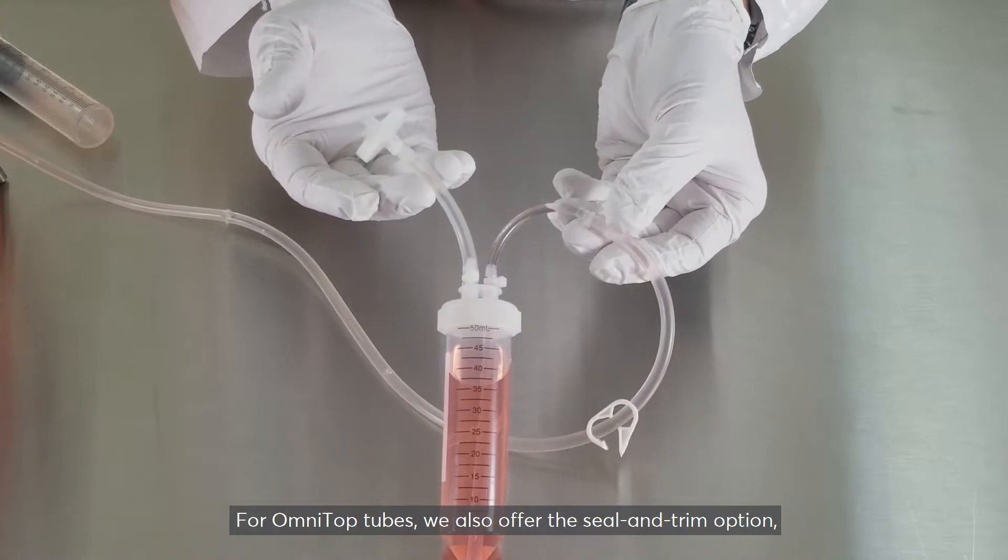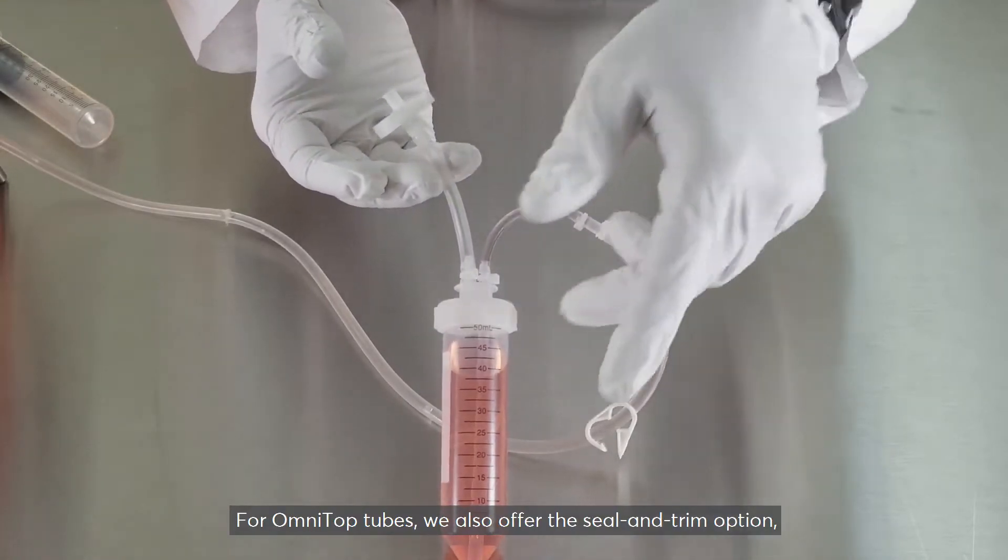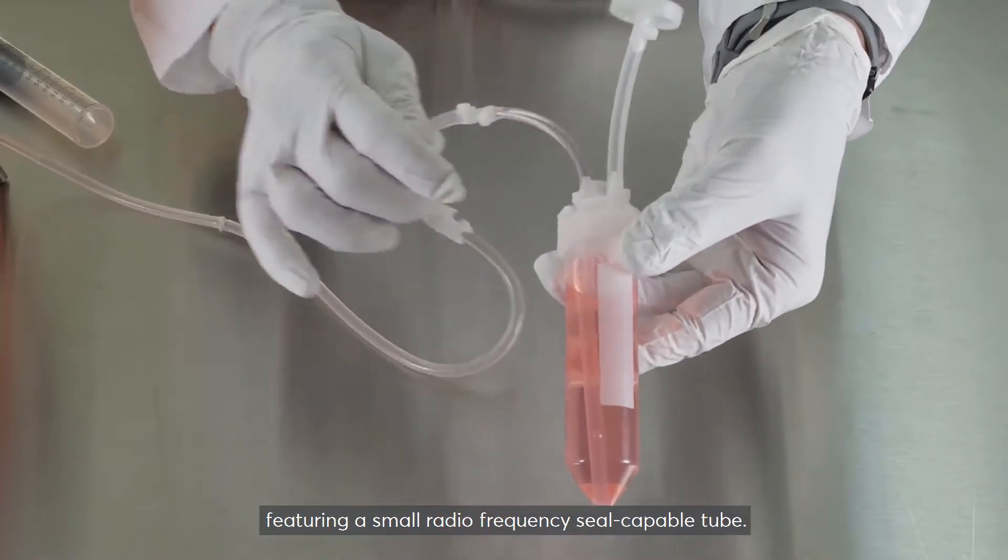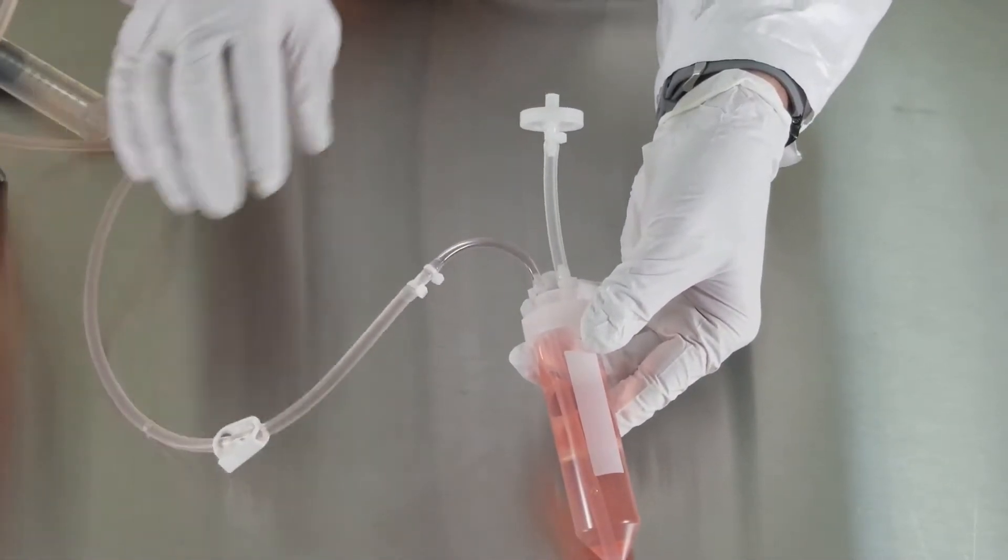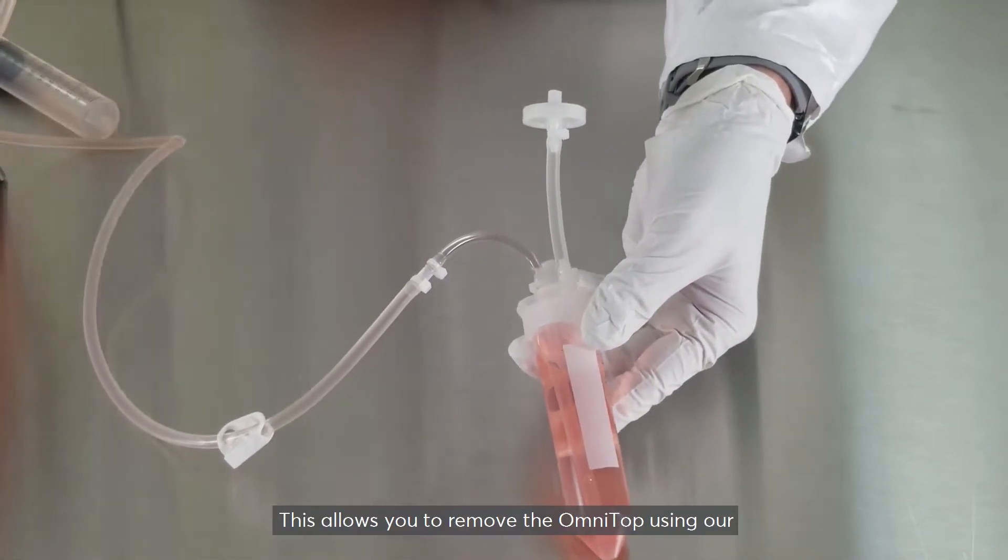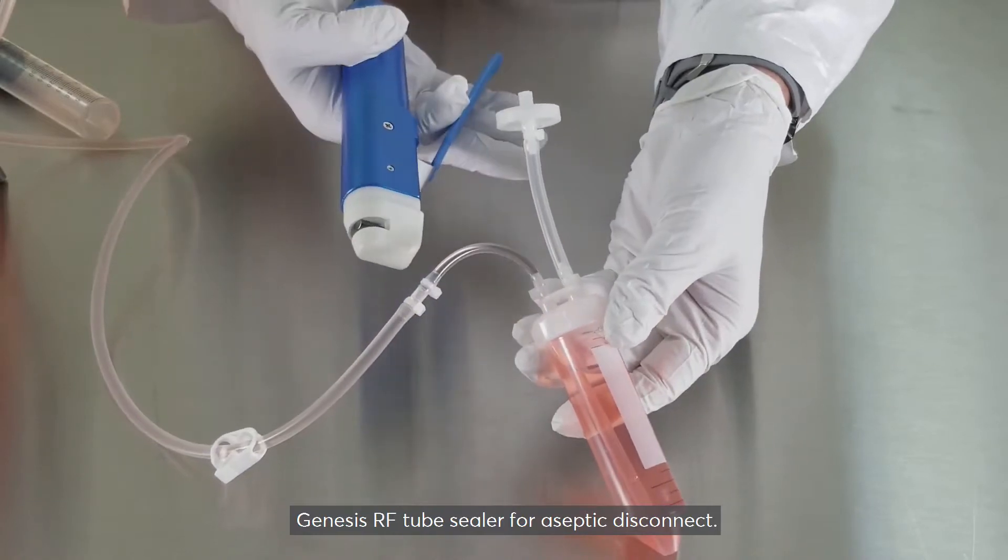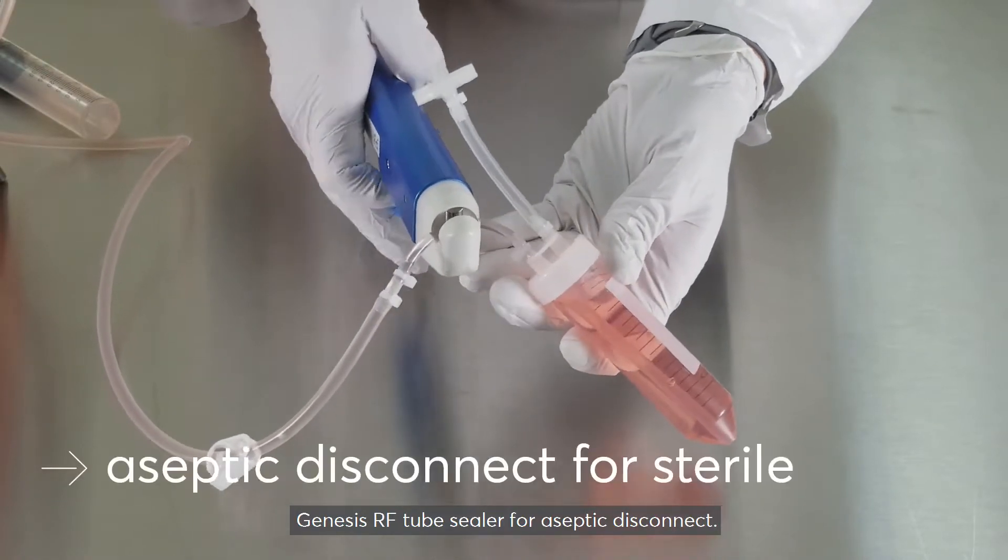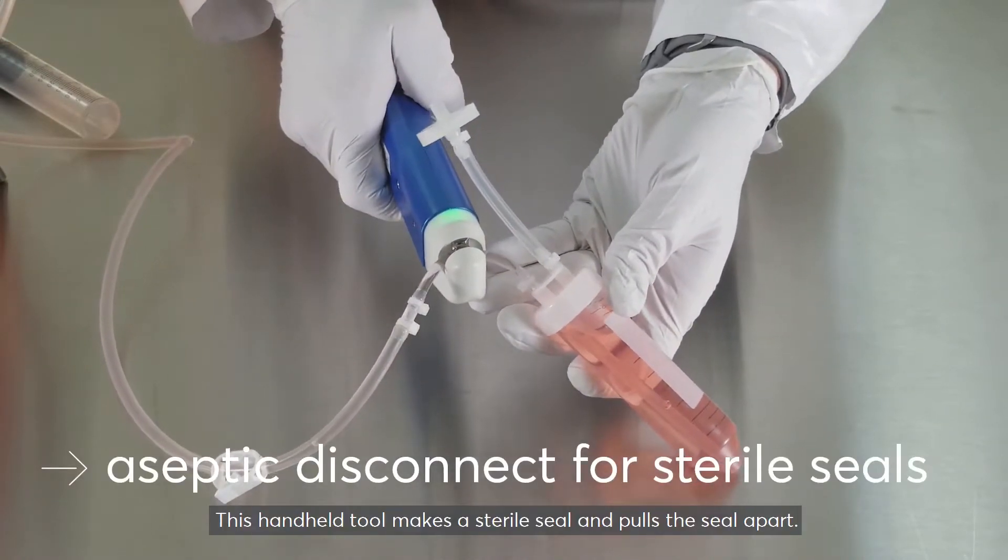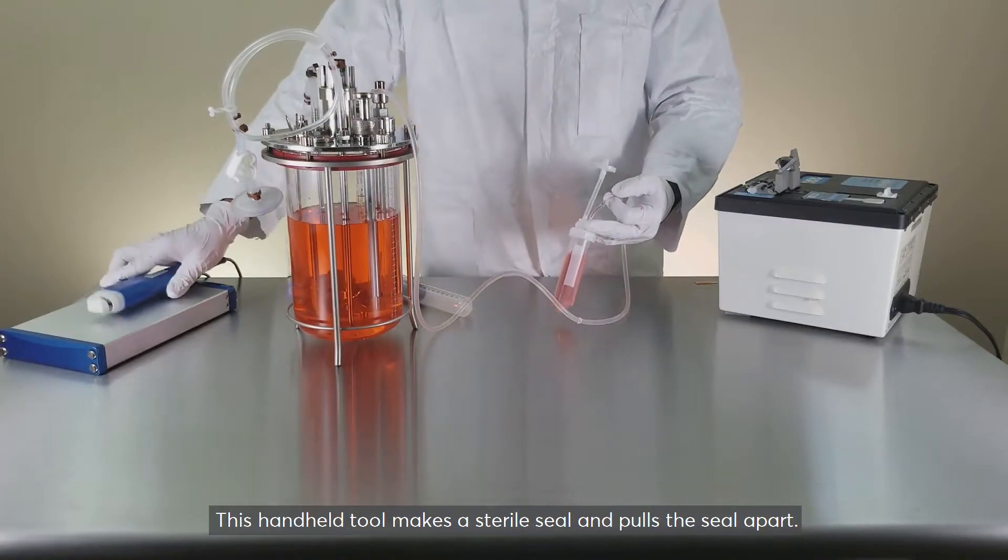For OmniTop tubes, we also offer the seal and trim option, featuring a small radio frequency seal capable tube. This allows you to remove the OmniTop using our Genesis RF tube sealer for aseptic disconnect. This handheld tool makes a sterile seal and pulls the seal apart.